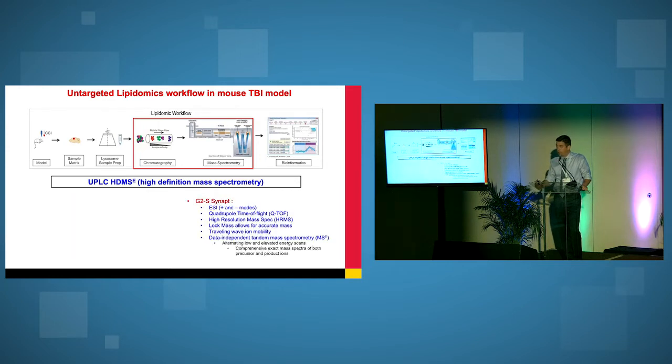The mass spectrometer that we're using is, at least within this work, is a Waters Synapt G2-S. We do both positive and negative runs. We collect with the lock mass to give us accurate mass. We enable the traveling wave ion mobility, and we're using data independent mass spectrometry. And I'll show you what some of that data looks like.